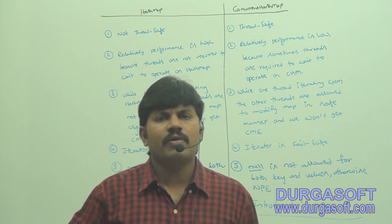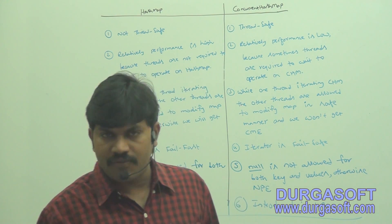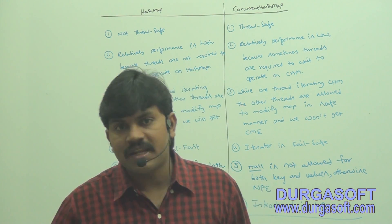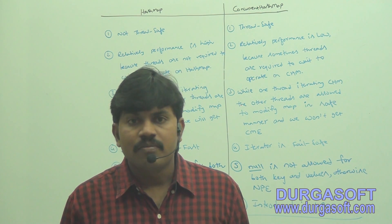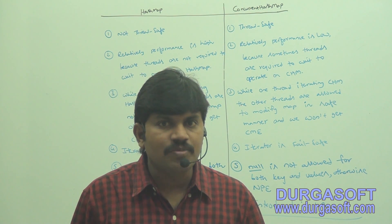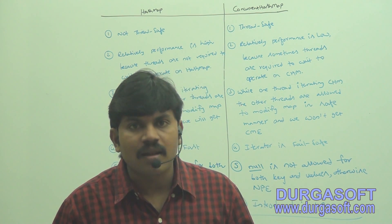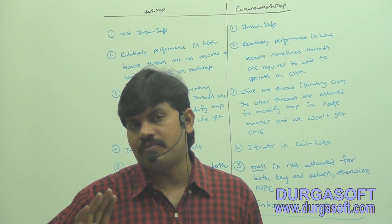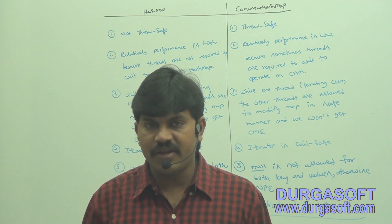For a normal HashMap, null is allowed for both key and value. But for ConcurrentHashMap, null is not applicable — neither for the key nor the value.